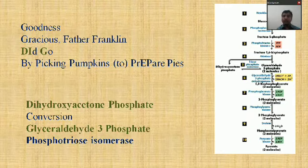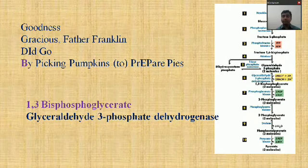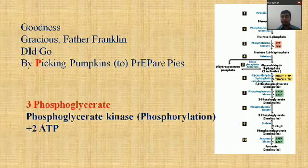Entering the energy generation phase: 'Picking' (P) — reaction six, glyceraldehyde-3-phosphate is converted into 1,3-bisphosphoglycerate, catalyzed by glyceraldehyde-3-phosphate dehydrogenase. 'Pumpkin' (P) — reaction seven, 1,3-bisphosphoglycerate is converted into 3-phosphoglycerate, with formation of two ATP molecules, catalyzed by phosphoglycerate kinase, reaction type phosphorylation.